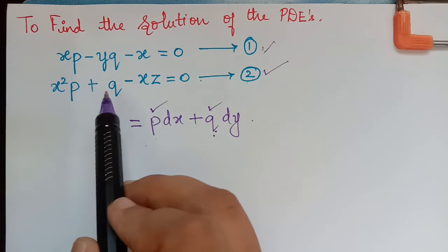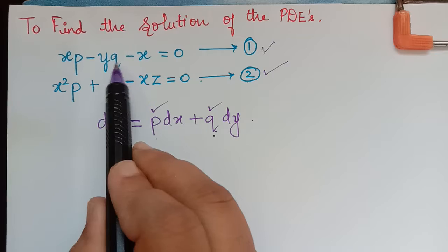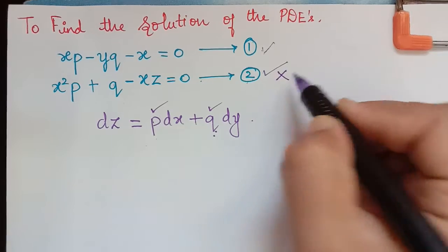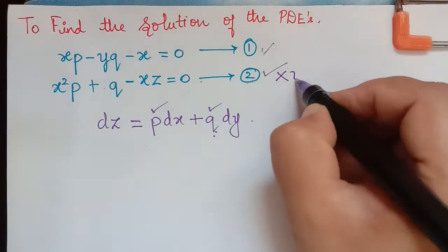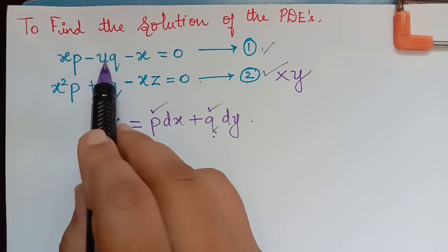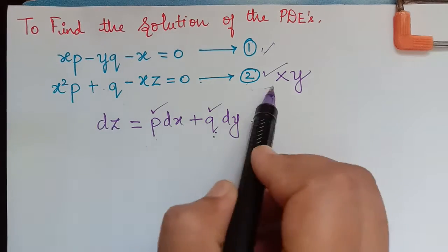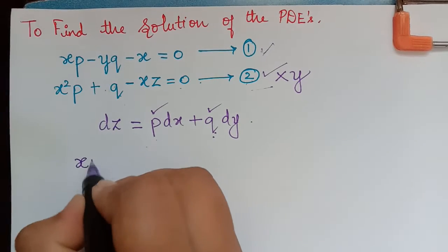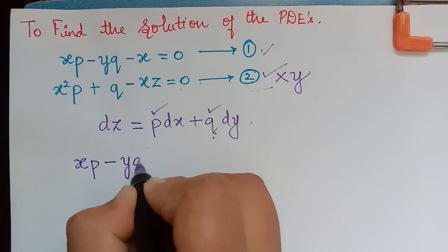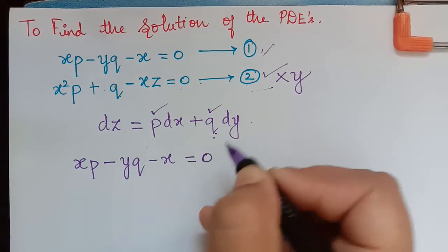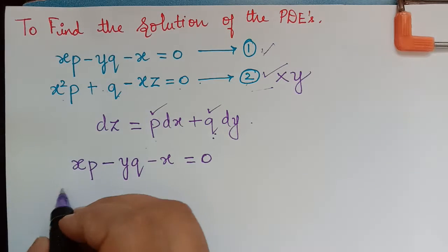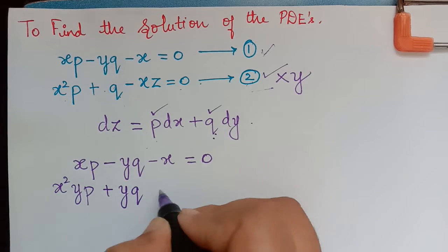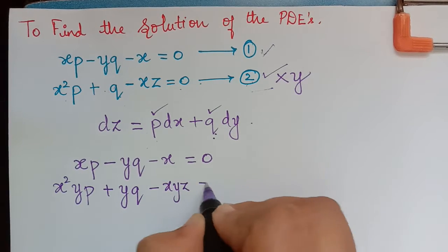We need to multiply equation 2 by Y in order to cancel terms and find the value of P. Equation 2 has to be multiplied with Y in order to make these two terms similar. So the first equation remains the same: XP minus YQ minus X = 0. The second equation multiplied by Y gives: X²YP + YQ minus XYZ = 0.